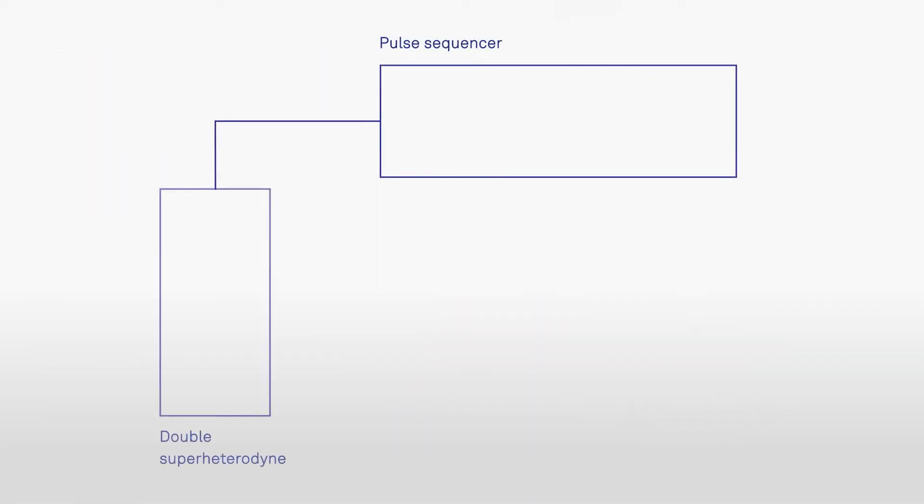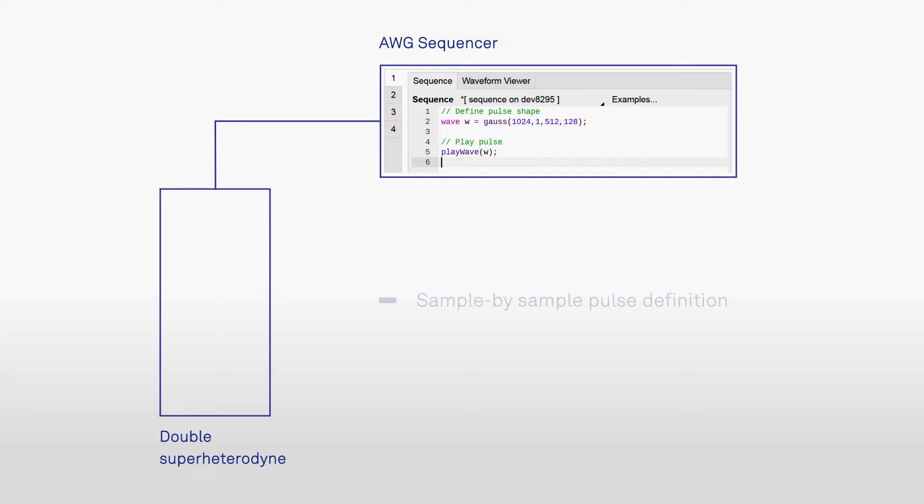So how does the SHFSG actually generate its signals? It combines an advanced pulse sequencer with built-in frequency up-conversion. At the beginning of the signal generation path, each channel of the SHFSG has its own AWG core that allows you to shape your pulses sample by sample with a sampling rate of 2 gigasamples per second and 14-bit vertical resolution.